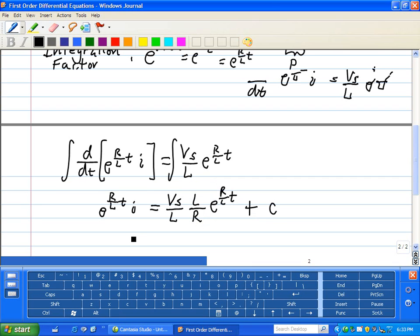Now we want to isolate our dependent variable i, our current. L's cancel right here. We have Vs over R, e to the R divided by L times t times e to the minus R/L times t. So we're multiplying e to the minus R/L times t on both sides. Plus c, e to the minus R/L times t.